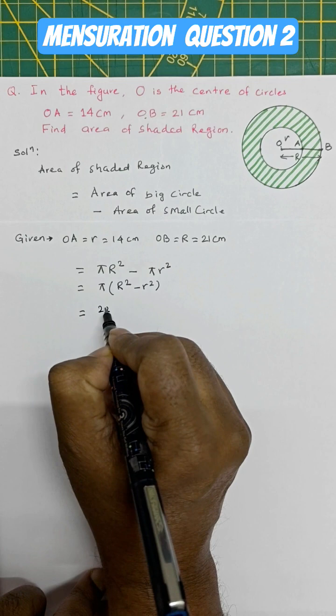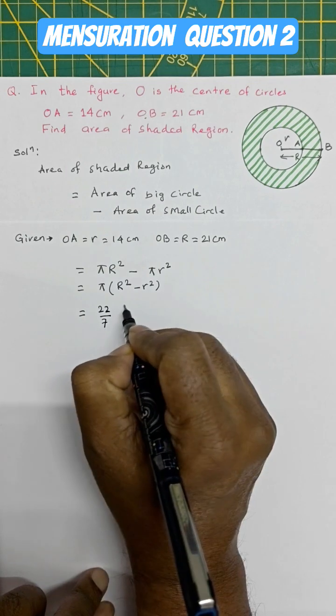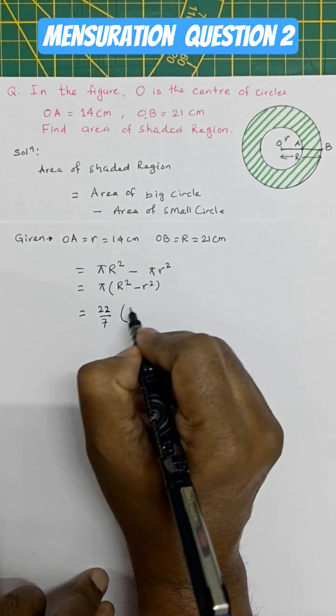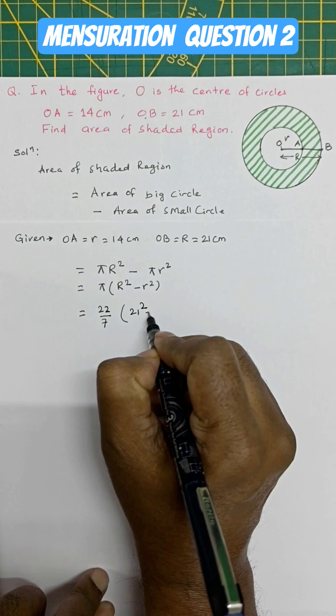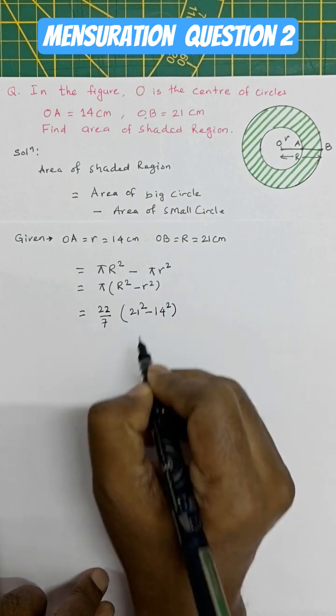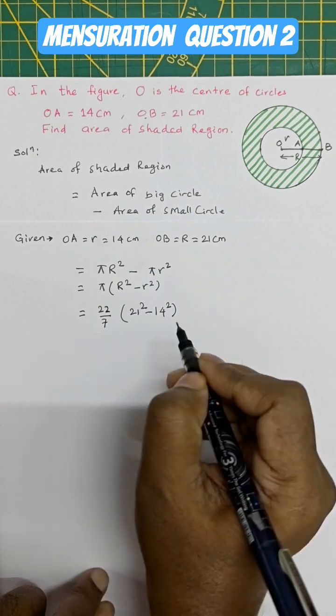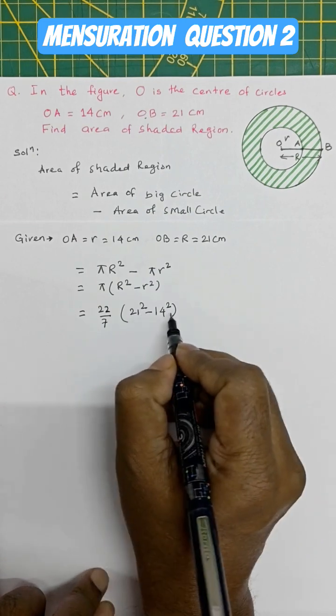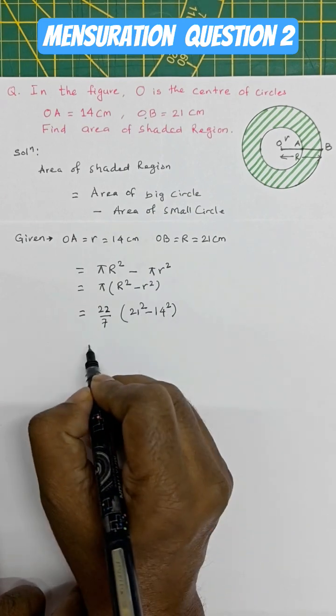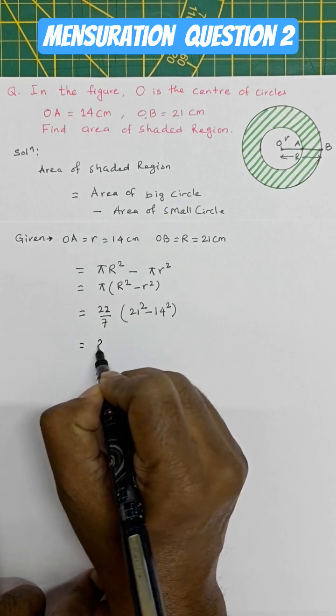22 by 7 into R is 21 squared minus 14 squared. So this one we can write as a squared minus b squared. We know the formula a squared minus b squared is equal to a plus b into a minus b.